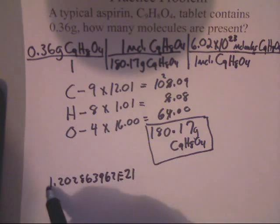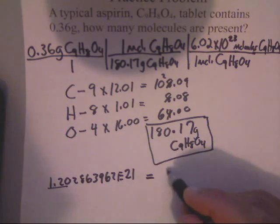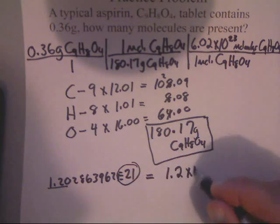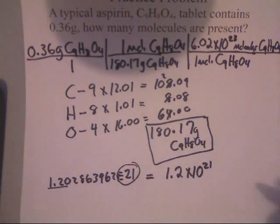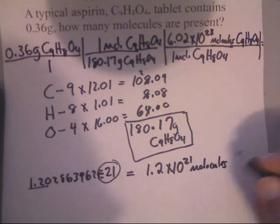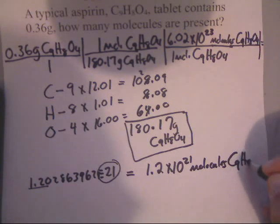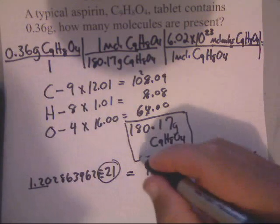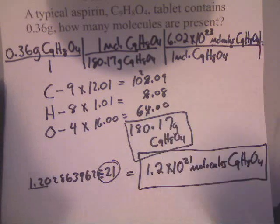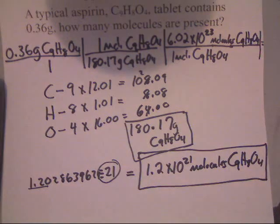We've got 1.202863962 E21. Now, I only need two sig figs. I'm going to keep the 1.2. So, it's 1.2. This E21 will be times 10 to the 21st. And it's going to be molecules of C9H8O4. And lo and behold, ladies and gentlemen, this is how you go from grams to molecules.